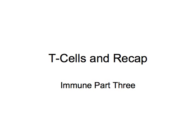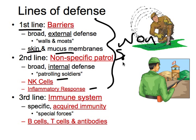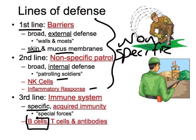The lecture is on T-cells — immune system part three. To recap: our skin and mucus are the first line of defense as barriers. Natural killer cells, inflammatory response, and antimicrobial proteins are all non-specific parts of our immune system that attack everything. Last time we started the third line of defense, which is specific — specific defenses for specific pathogens — and we focused on B-cells. Today we're going to talk a lot about T-cells.